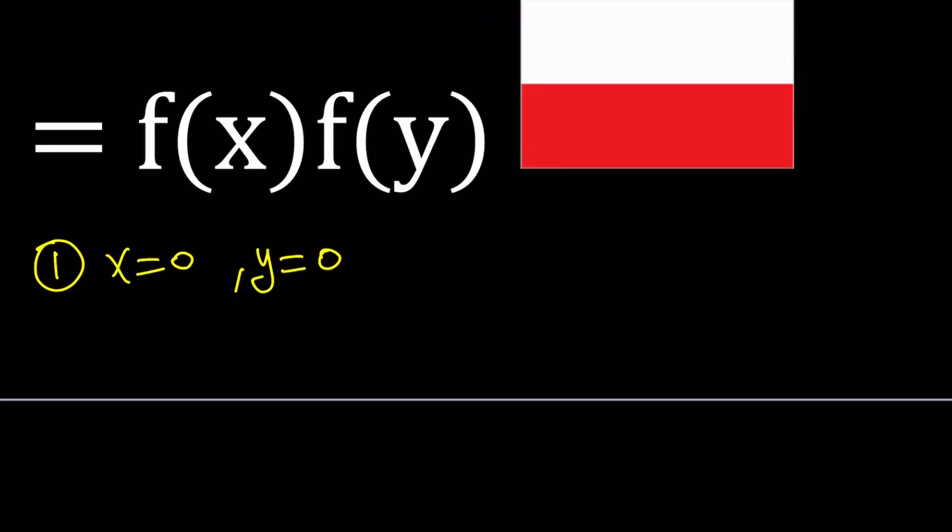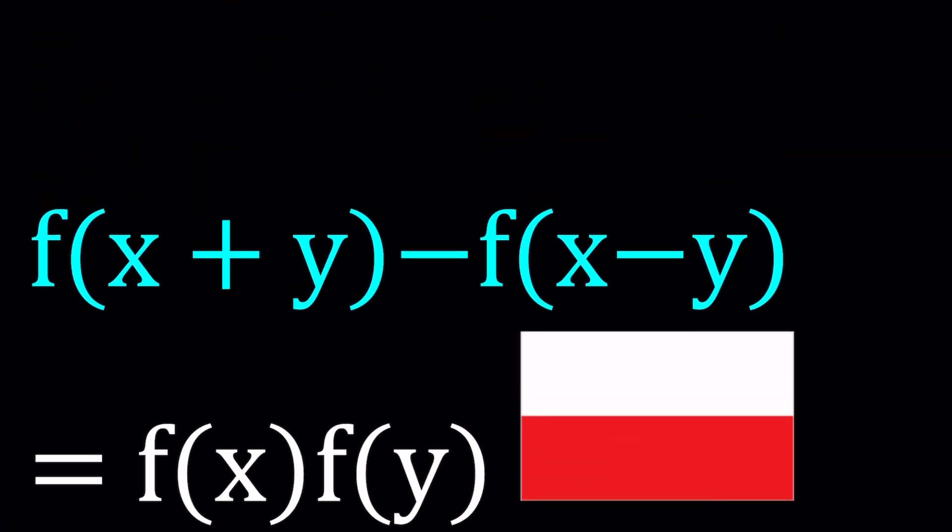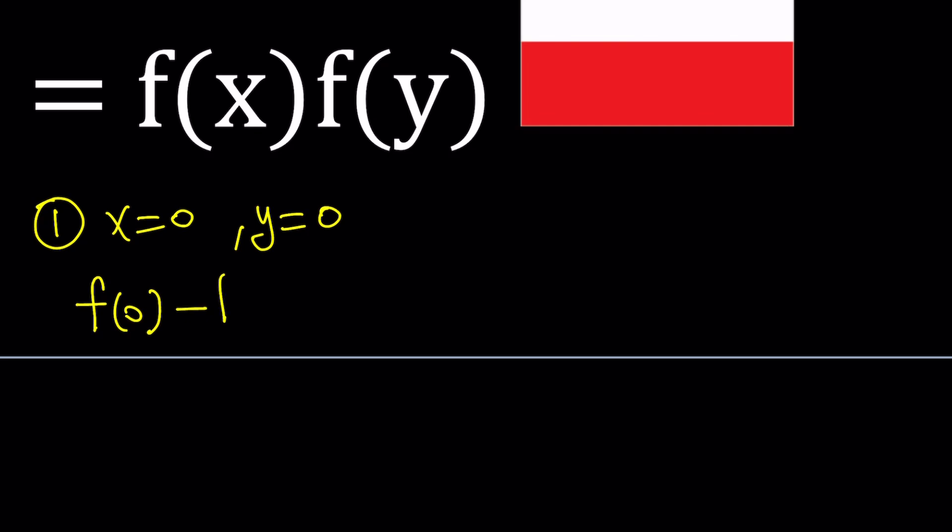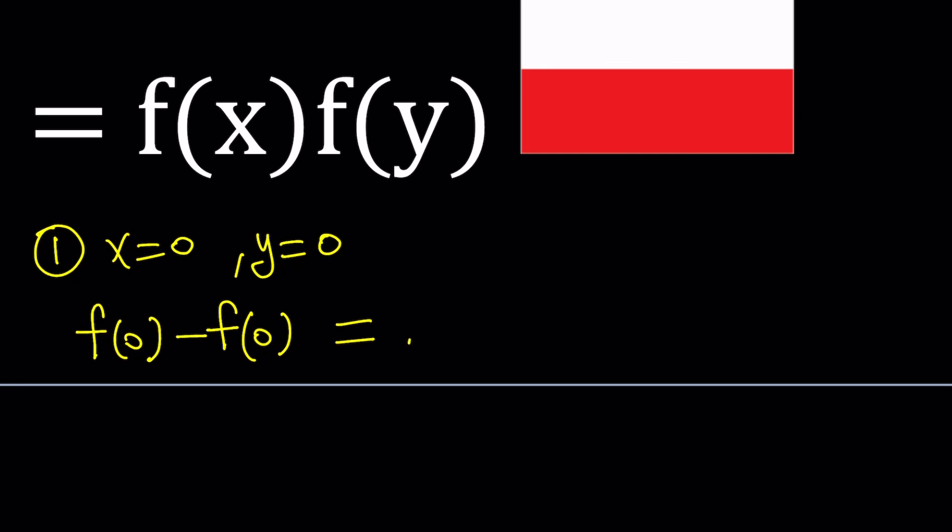When you replace x and y with 0 at the same time, you're going to be getting f of 0, which is x plus y, right? Actually that's a minus sign, f of x minus y, which is 0 again, equals f of x times f of y, which is going to be f of 0 times f of 0. Awesome.